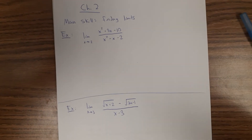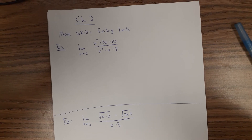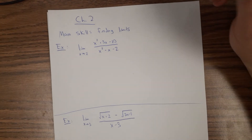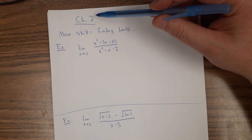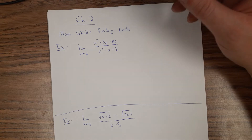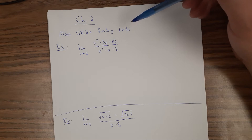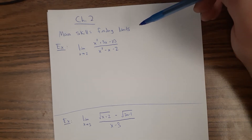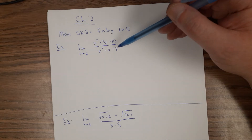Okay, so here's the first video on reviewing for the final. I'm going to start with stuff out of chapter 2, which was about limits. The main skill is to just find a bunch of limits — there's not too much else that's going to come out of this chapter, so let's just start looking at some.